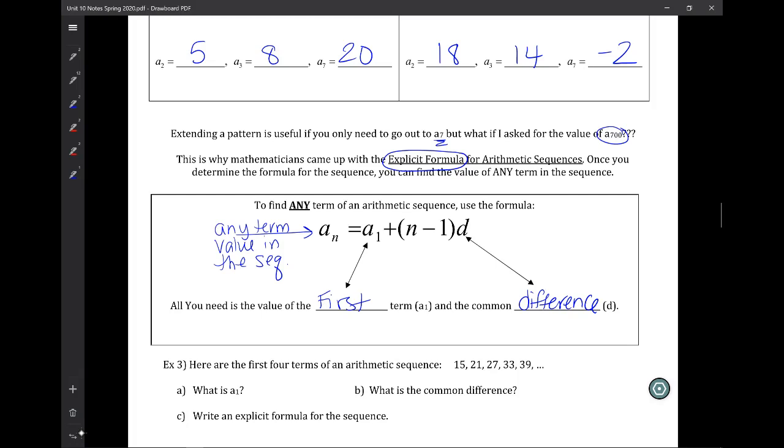N is representing which term you're looking for. Are you looking for the 10th term? Plug in a 10. Are you looking for the 200th term? Plug in a 200 for N. N is essentially like your variable, what we used to use as X.